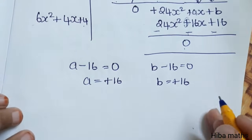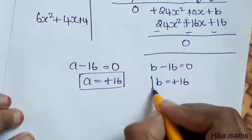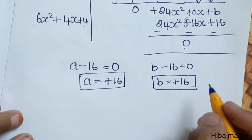So a value is equal to b value. So a is equal to 16 and b is also plus 16.